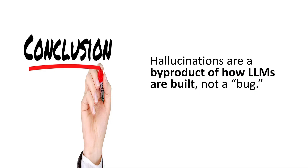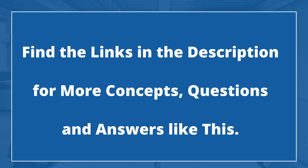So the next time your AI assistant confidently tells you something surprising, remember — it might be hallucinating. And the smarter we get at spotting and reducing hallucinations, the closer we move towards truly trustworthy AI systems. If you are interested in exploring more about machine learning, data science, and large language models, please find the links in the description of this video for more concepts, questions, and answers like this.